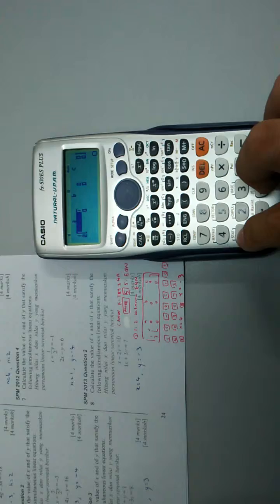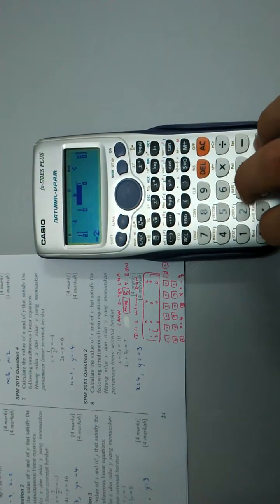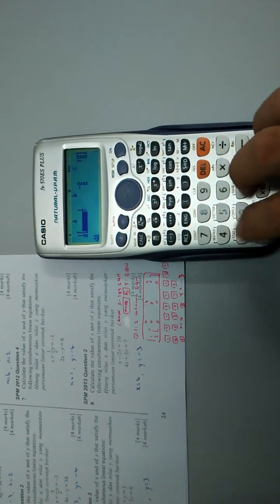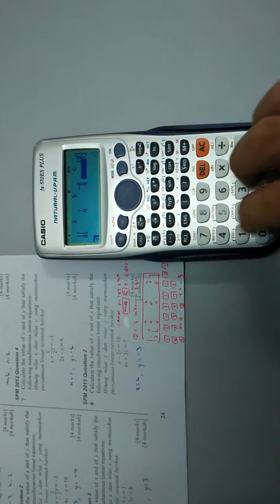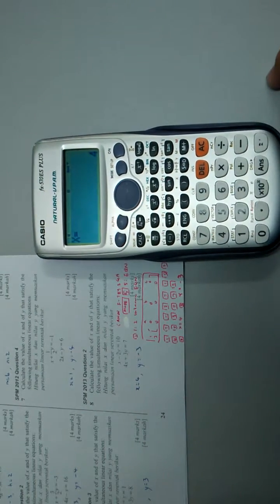And they will ask for the coefficient. For a_1 negative 2, 10 and 4, 3, 7. And I press equal again. It returns x equal to 4 and y equal to negative 3.